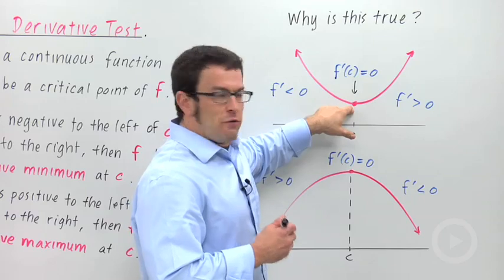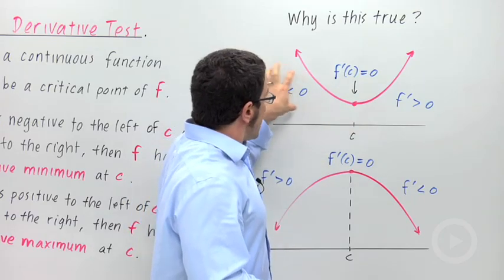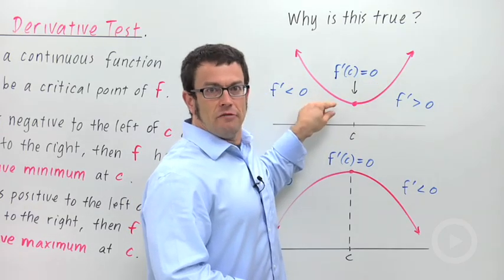But remember, what we're going to be searching for is where the derivative goes from negative to positive. That will indicate a relative minimum.